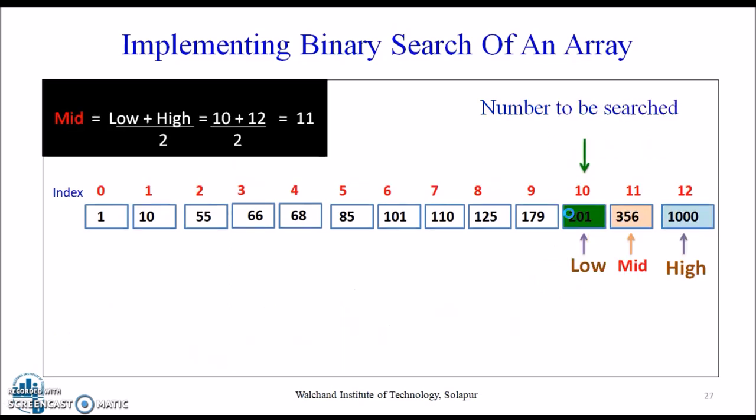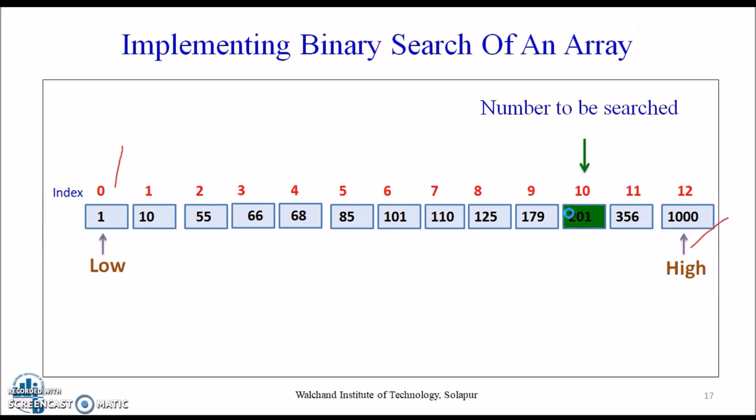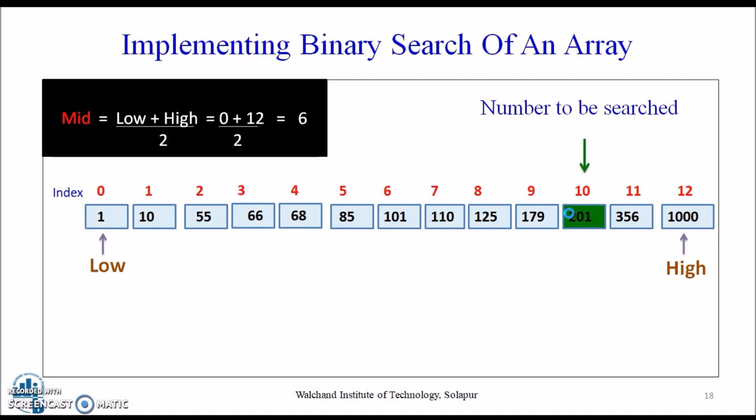A quick recap of the entire process once again. As we have seen, this was our sorted array. We wanted to search the element 201. We calculated the mid by using the formula low plus high, and each time we compared it.